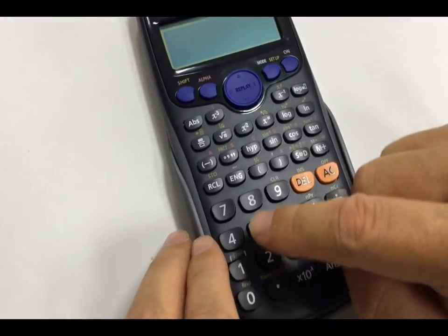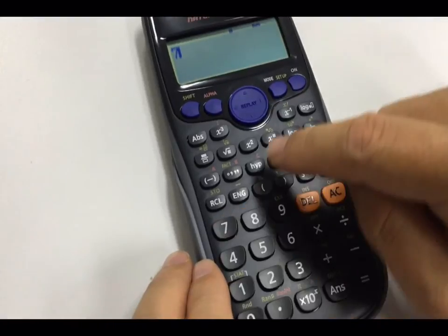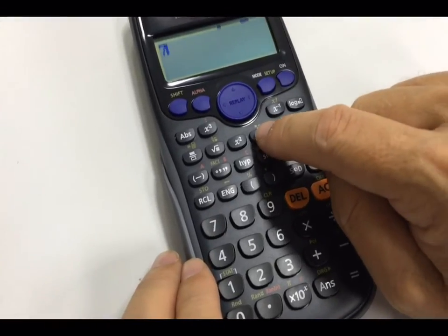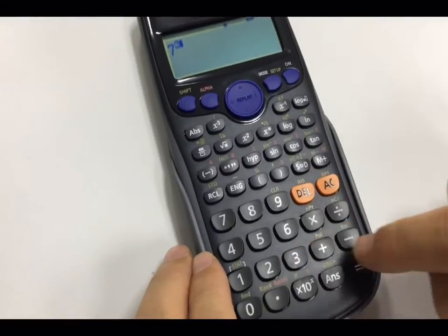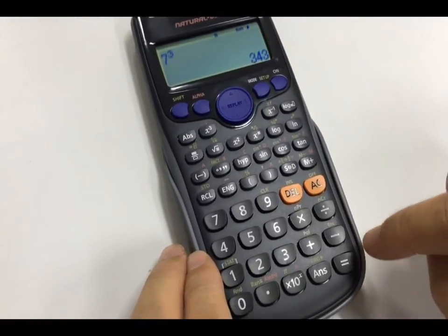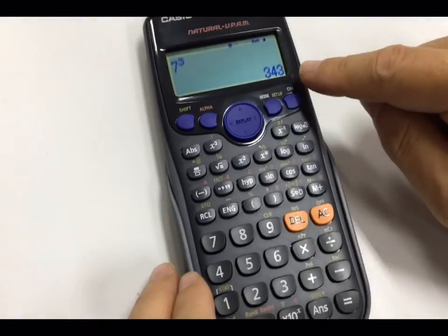We're going to do 7 cubed, so that's 7, and the cubed button is this one here, so you press that, and then you have to put in the power as well, which is 3, and then press equals, we get 343.